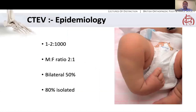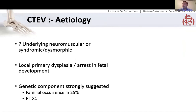A bit of epidemiology. Clubfoot is basically the commonest congenital foot and ankle problem, with an incidence of one to two per thousand. It's very common and managed in most hospitals around the UK. There's a preponderance for males and it's bilateral in 50% of cases. 80% are isolated — no other syndromes. In terms of aetiology, it's often called idiopathic clubfoot because it's not entirely clear what's going on. It's hypothesised there might be an underlying neuromuscular, syndromic, or dysmorphic problem, and there's a strong genetic component with familial occurrence in 25% of cases.